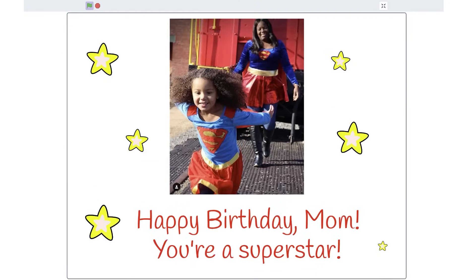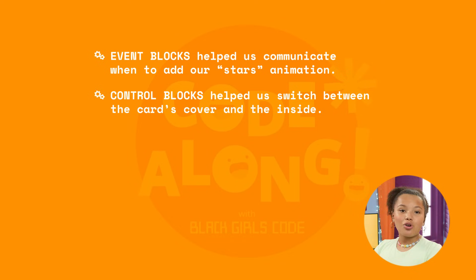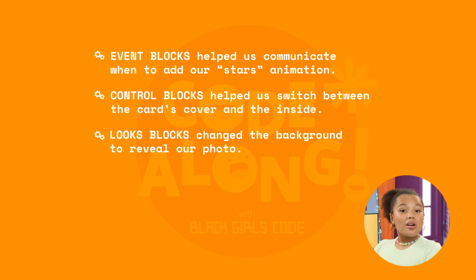Once you have as many stars as you want, test out your brand new birthday card. We did it! It worked! I think my mom will really love this. Today, we learned how to use Events blocks to start our project and communicate when to add our stars animation. The Control blocks help to switch between the cover of the card and the inside. And the Look blocks change the background to reveal me and my mom.